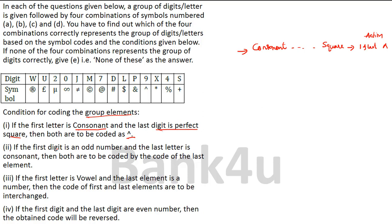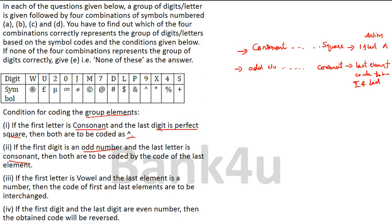Condition 2 — if the first digit is an odd number and the last letter is a consonant, then both are to be coded as the code for the last element. That means the last element's code has to be placed for both the first and last elements.